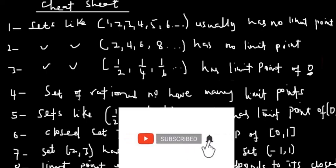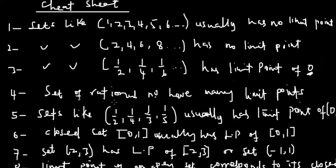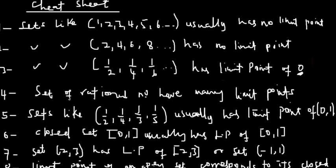Sets of rational numbers have many limit points. Rational numbers can be represented as fractions; they are recurring and non-terminating. If you need a refresher, go back to the video on rational and irrational numbers. Next: a set containing both even-denominator and odd-denominator fractions like 1/2, 1/4, 1/3, 1/5 has two limit points — zero and one — so its limit point set is {0, 1}.